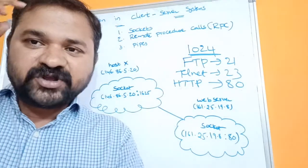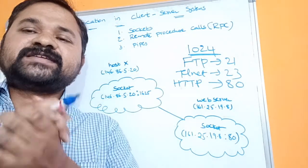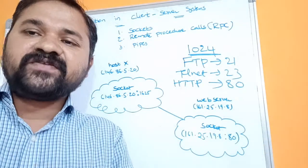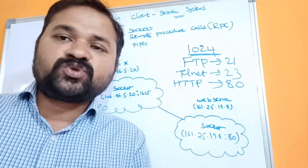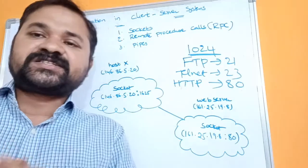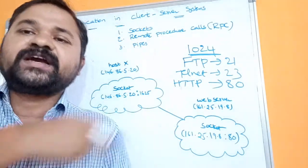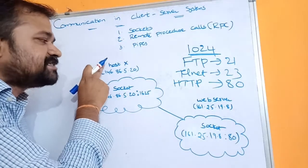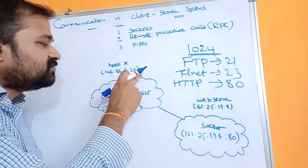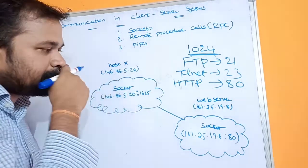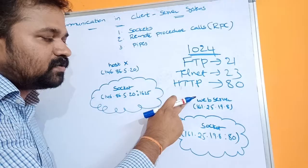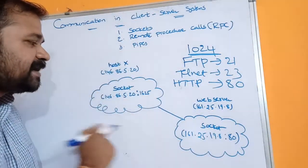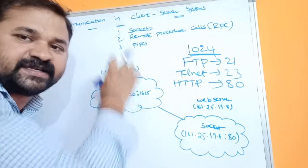Now let's see how communication happens between client and server. First, the server waits for the client connection request. Whenever the client sends a connection request to the server, the server accepts that request and provides the corresponding connection to the client machine. In this example, host X is the client with IP address 126.86.5.20, and we have a web server with IP address 161.25.19.8. A socket is created for the process in the client machine.